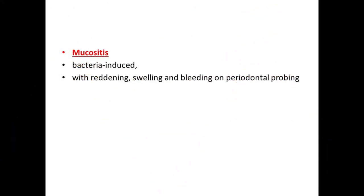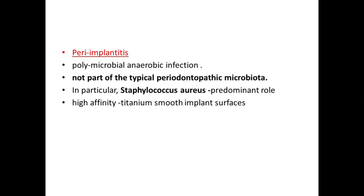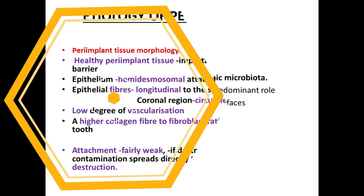Mucositis is usually bacterial-induced and involves reddening, swelling, and bleeding on probing. Peri-implantitis is a polymicrobial anaerobic infection — not only typical periopathogens are found, but Staphylococcus aureus also plays an important role. These organisms have a greater affinity towards titanium smooth implant surfaces.